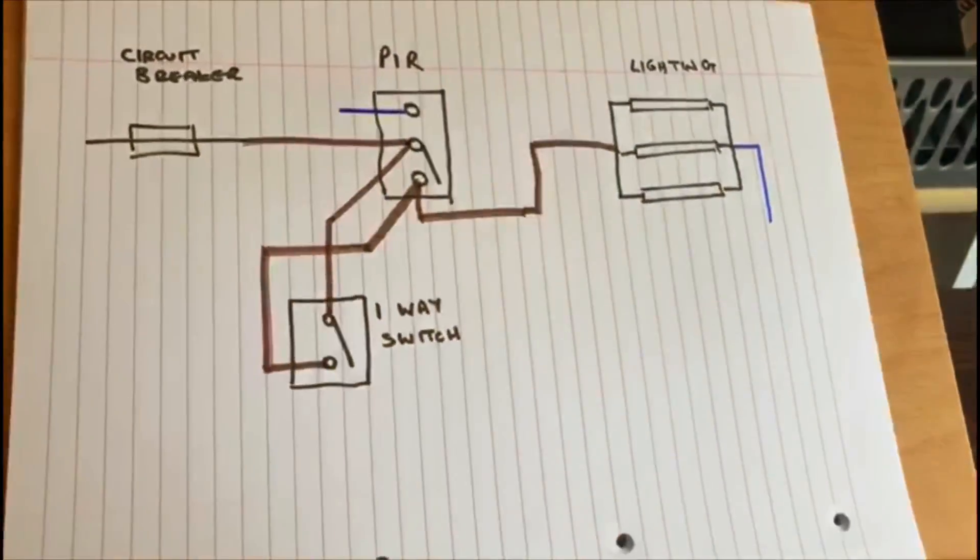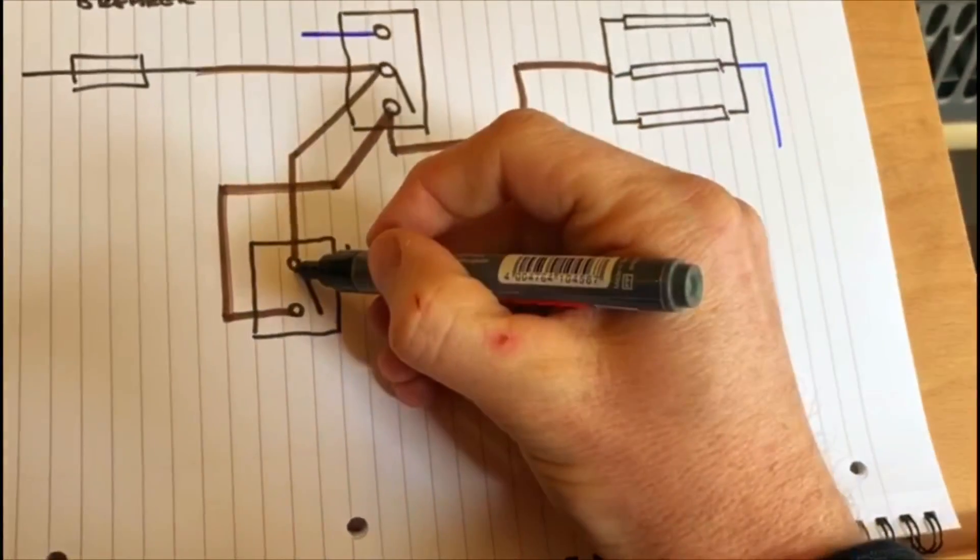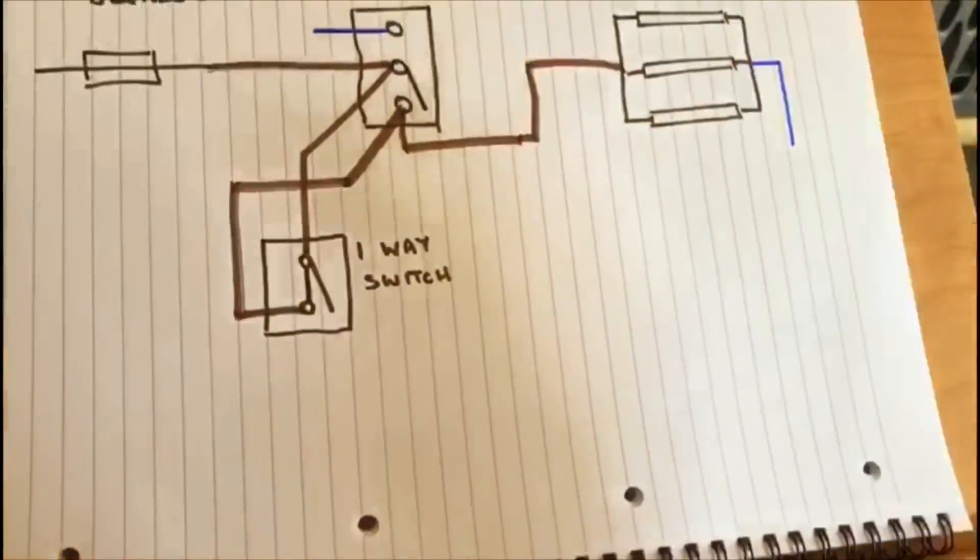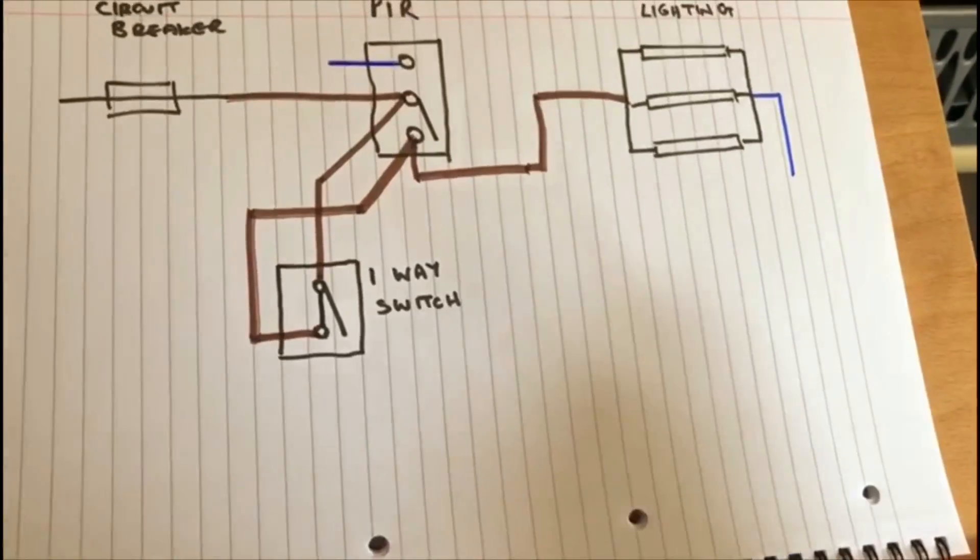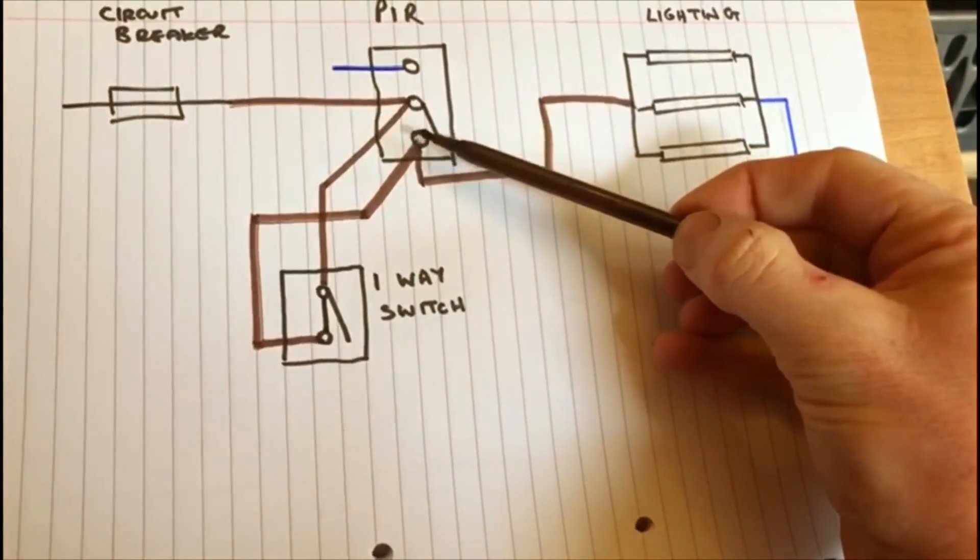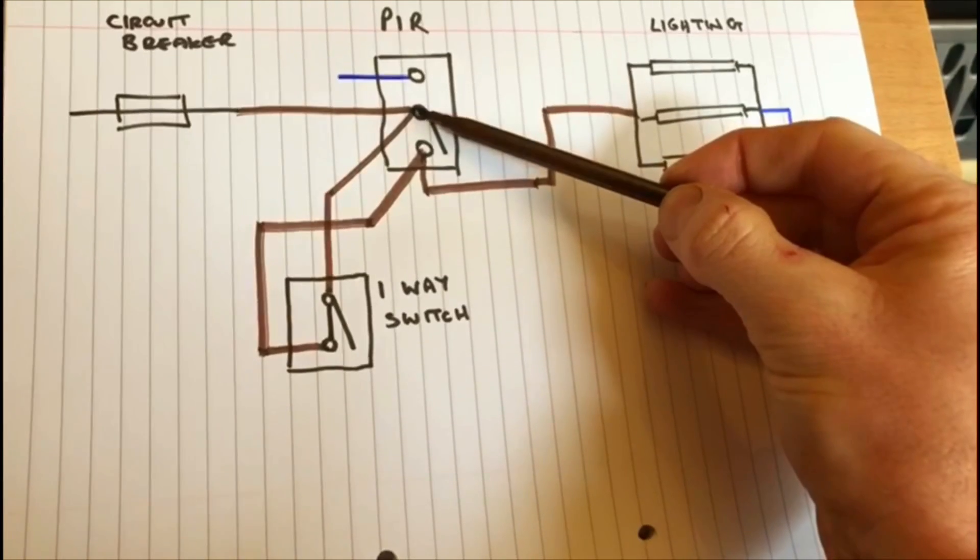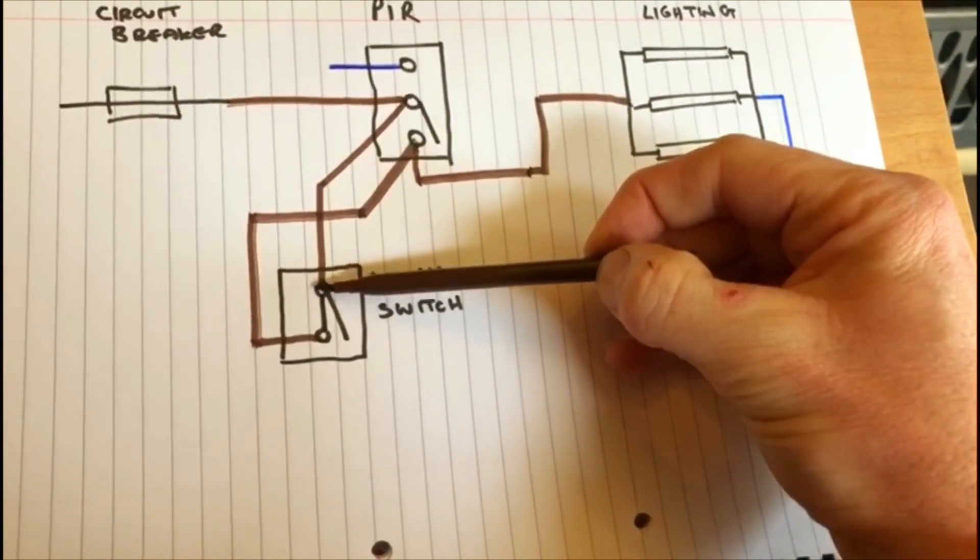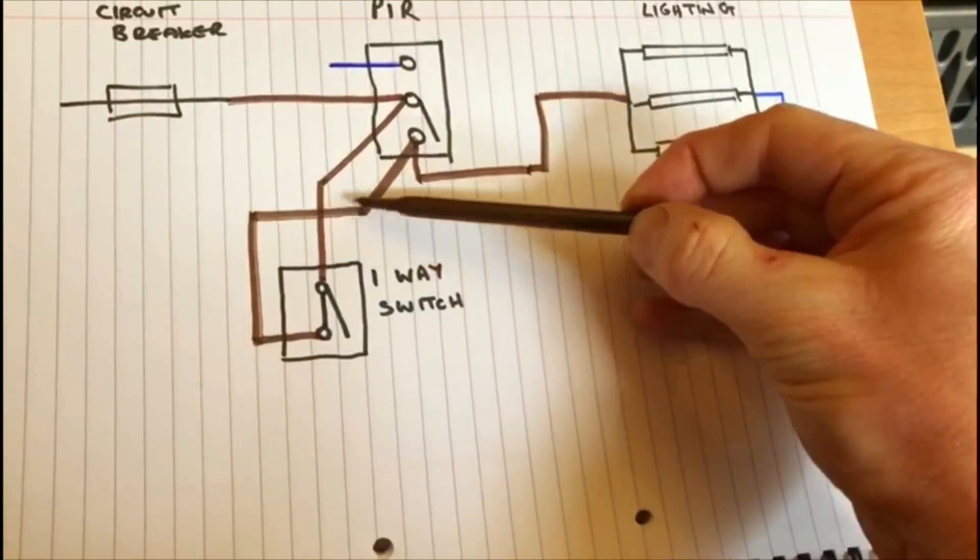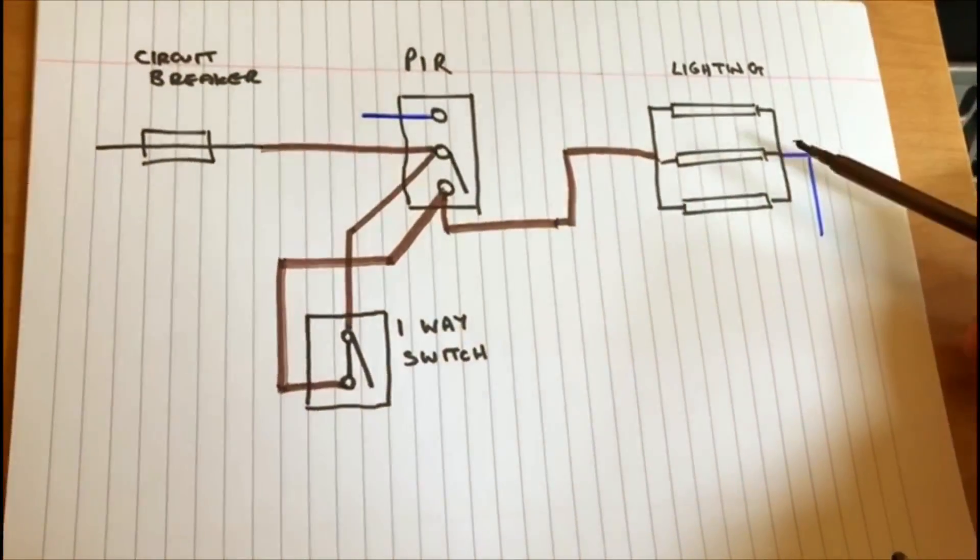...if we were to operate the switch and close it like so, now what we have done is we have overridden the PIR. So basically the connection is now through here to the PIR, all the way through down into the switch, through the switch back up through the switch live connection, and then back to the lights. And now the lights will stay on.